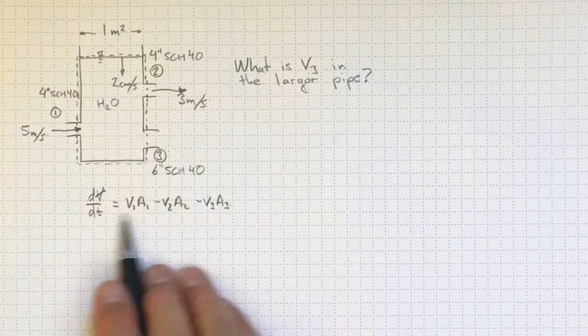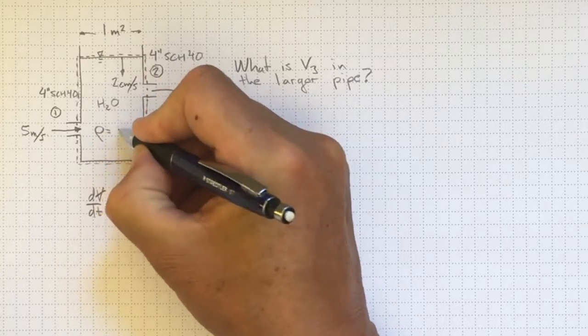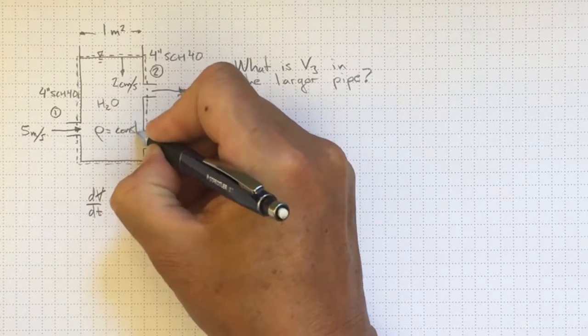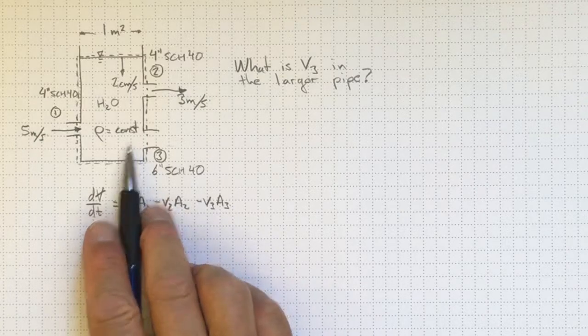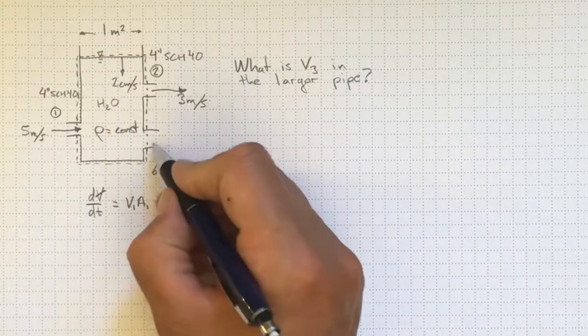Now in writing this equation like this with just the volume flow rates, I'm making the assumption that density is a constant. I don't need to know what it is, I just need to know that it's a constant, that this fluid is incompressible, it's all the same density everywhere.